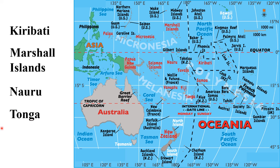Tonga is another country in Oceania with no permanent rivers. Tuvalu is also a country in Oceania with no permanent natural rivers.